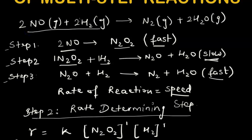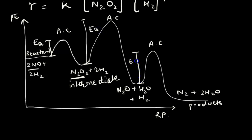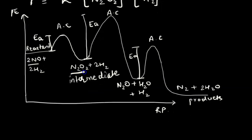The reactants are 2NO + 2H₂ from the original equation. In step 1, only 2NO rearranges to form N₂O₂, so 2H₂ remains unchanged — this intermediate form carries forward. Step 2 has the highest activation energy of all three steps, making it the slowest step. In step 2, N₂O₂ and H₂ react to give N₂O and H₂O.